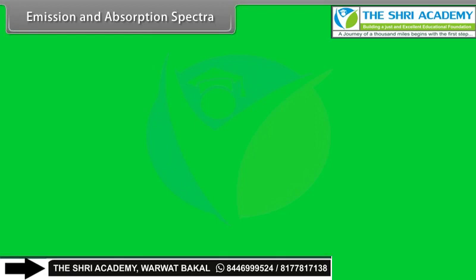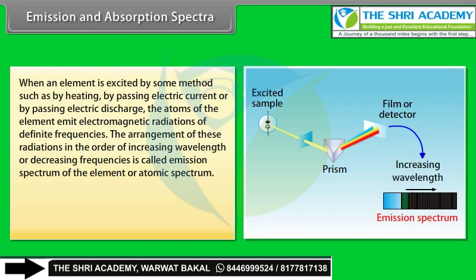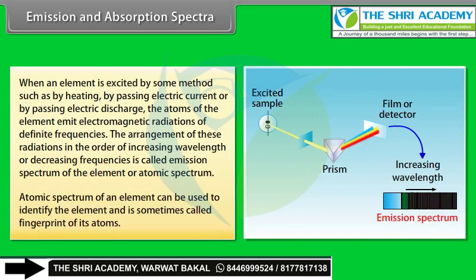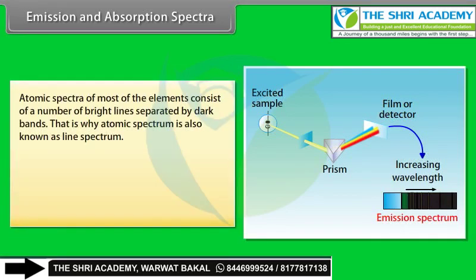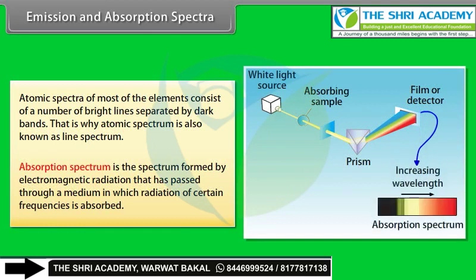Emission and absorption spectra: When an element is excited by heating, electric current, or electric discharge, its atoms emit electromagnetic radiation of definite frequencies. The arrangement of these radiations in order of increasing wavelength is called the emission spectrum or atomic spectrum of the element, sometimes called the fingerprint of its atoms. Atomic spectra consist of bright lines separated by dark bands — hence also called line spectrum. Absorption spectrum is formed by radiation that has passed through a medium absorbing certain frequencies.